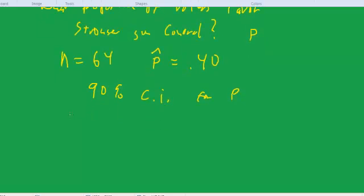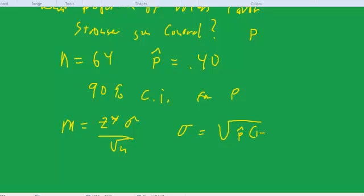We have our formula for the margin of error is equal to Z star sigma over square root of n. Now, for sigma, we can use the square root of P hat times 1 minus P hat. We can actually use, because it's binary data, we can use the sample proportion times 1 minus the sample proportion or the square root of 0.4 times 0.6.